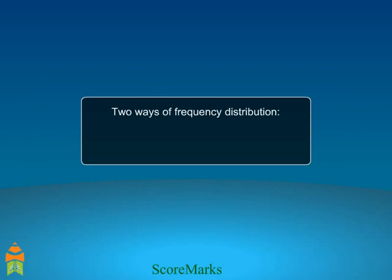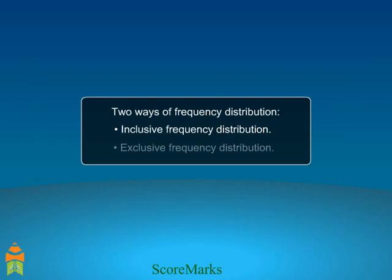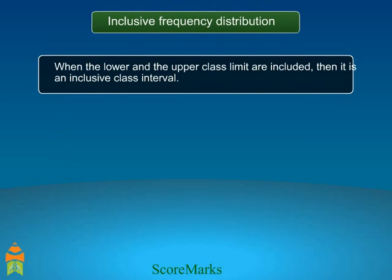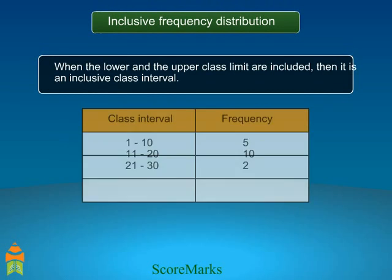The two ways of frequency distribution are inclusive frequency distribution and exclusive frequency distribution. Inclusive class interval: when the lower and the upper class limits are both included, then it is an inclusive class interval.